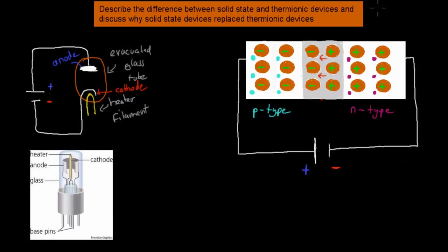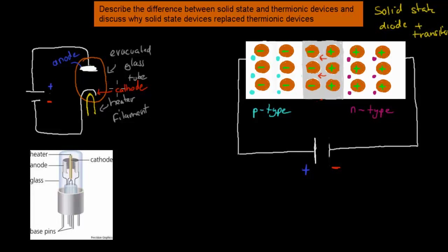In the last video we touched on solid state devices, more specifically solid state diodes and solid state transistors. In this video we're going to cover a couple of the thermionic devices and compare them to solid state devices in terms of the difference between the two. So first I'll talk about your thermionic diode and how that works compared to your solid state diode.